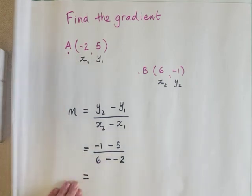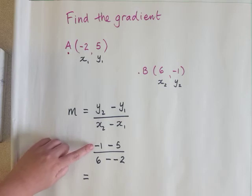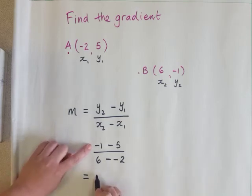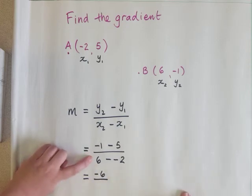So now we work out what that equals. Top line, negative 1 take away 5 gives you negative 6. Bottom line, 6 take away negative 2 is the same as 6 plus 2. So that will be 8.